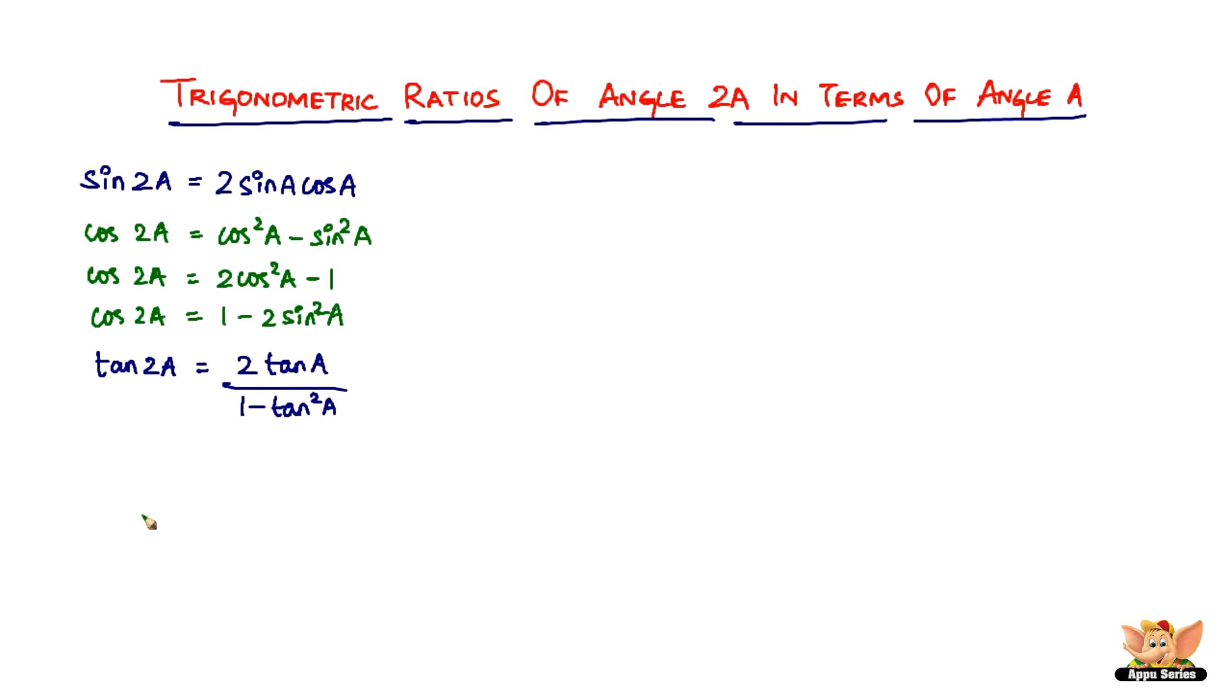And sine and cos are not done yet. You still got sine 2a if you want to write it in terms of tan especially. You can write sine 2a as 2tan a divided by 1 plus tan²a. That's how you can write sine 2a in terms of tan a.